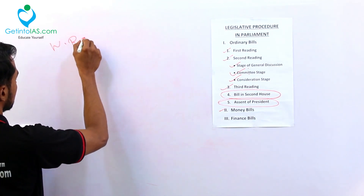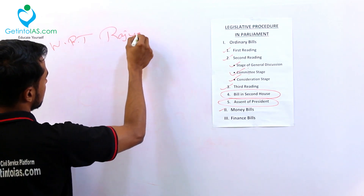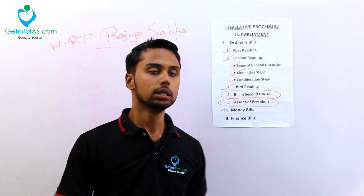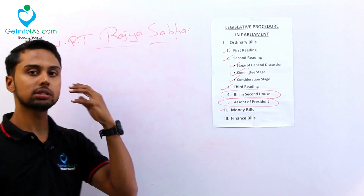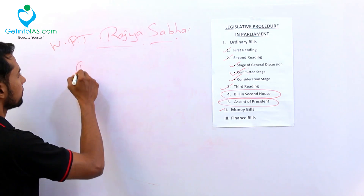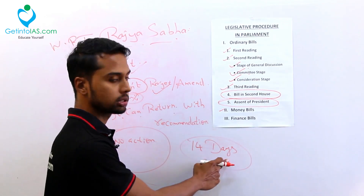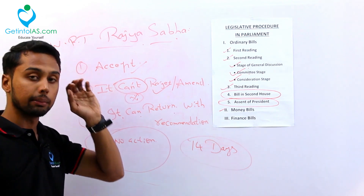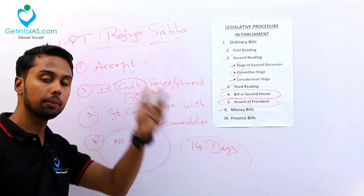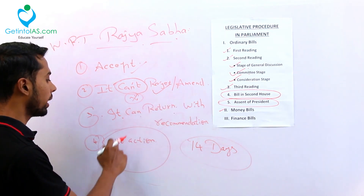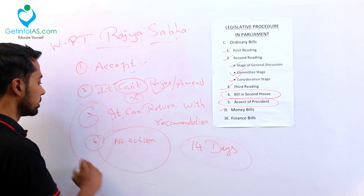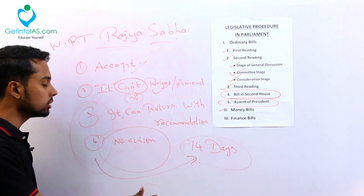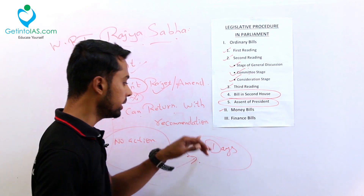Now with respect to Rajya Sabha, since money bill can be introduced only in Lok Sabha, what is the role of Rajya Sabha with respect to money bills? Rajya Sabha has 14 days. Rajya Sabha cannot reject your money bill. The money bill cannot be passed in Rajya Sabha and cannot be rejected by Rajya Sabha either. It can return the bill with recommendations, or take no action. These options are all related to this 14-day window. Everything should be completed within 14 days.